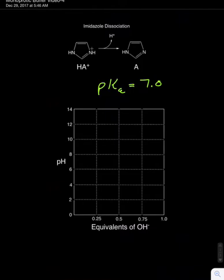In any problem with weak acids and bases, it can be helpful to draw the titration curve to gain a sense of where you are. The imidazole curve looks like this.